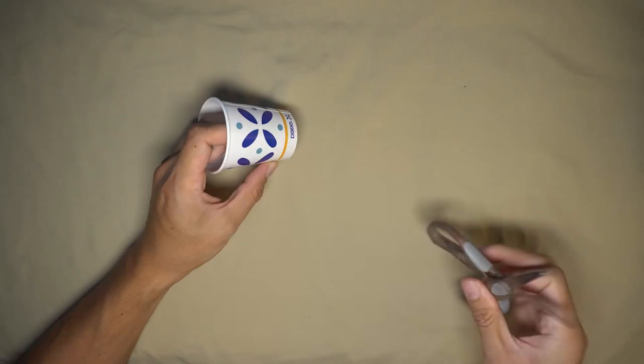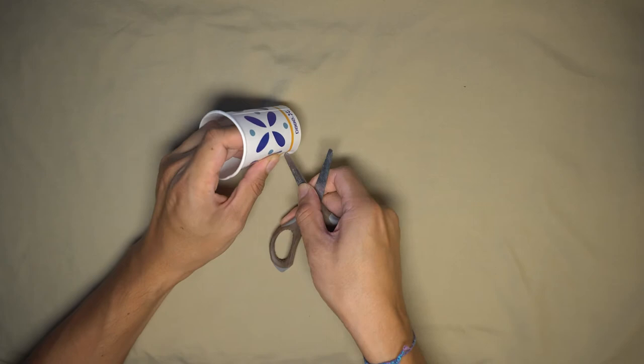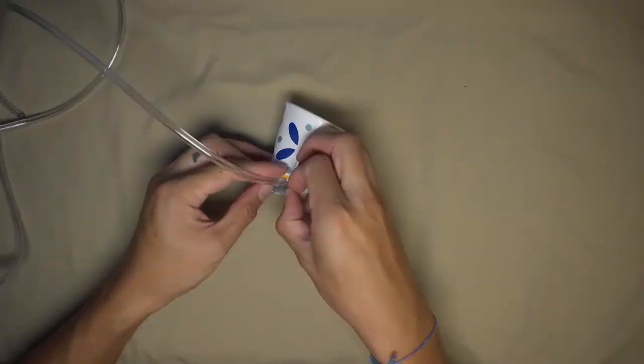First, cut a hole near the bottom of the first cup. Then, put the tube through the hole and seal any leaks.